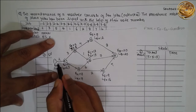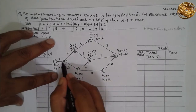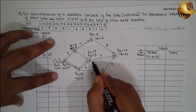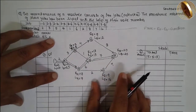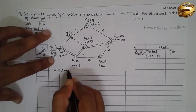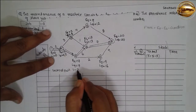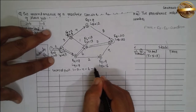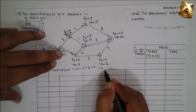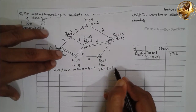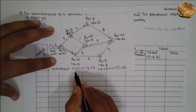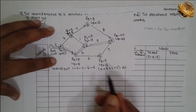Now see the critical path. Where E equals L: node 1 (0,0), node 2 (2,2), node 4 (7,7), node 6 (13,13). The critical path is 1→2→4→6→8.